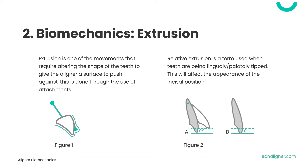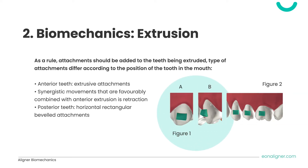As discussed, extrusion requires the addition of attachments, and the type depends on the position of the tooth within the arch. Extrusive attachments shown in Figure 1A are placed on all anterior teeth during extrusion. A synergistic movement favorably combined with anterior extrusion is retraction, because the active surface of the extrusive attachment comes at an angle to the long axis of the tooth as shown in Figure 1B. Combining extrusion and retraction increases predictability. For posterior teeth, horizontal rectangular beveled attachments shown in Figure 2 are used when planning extrusive movements.